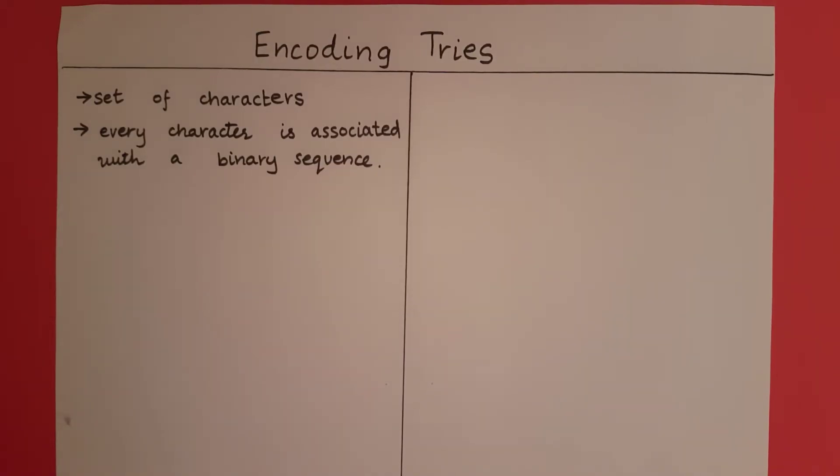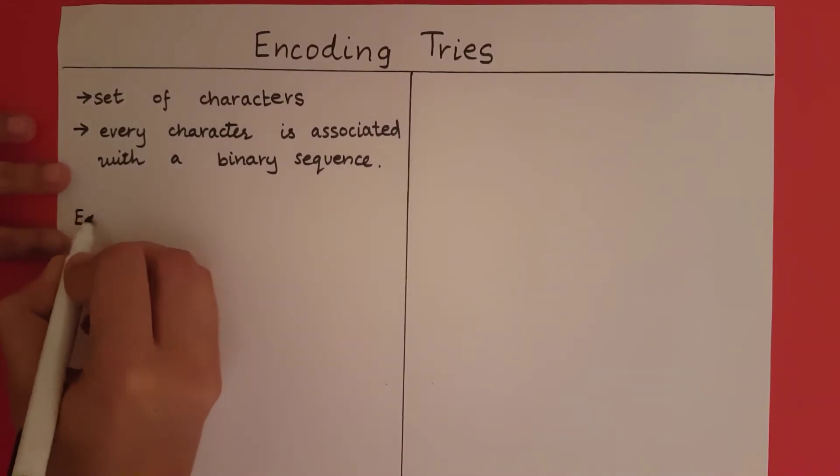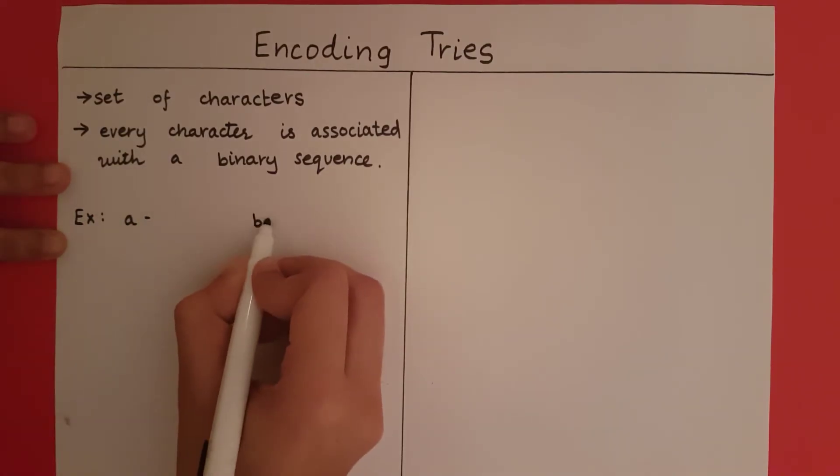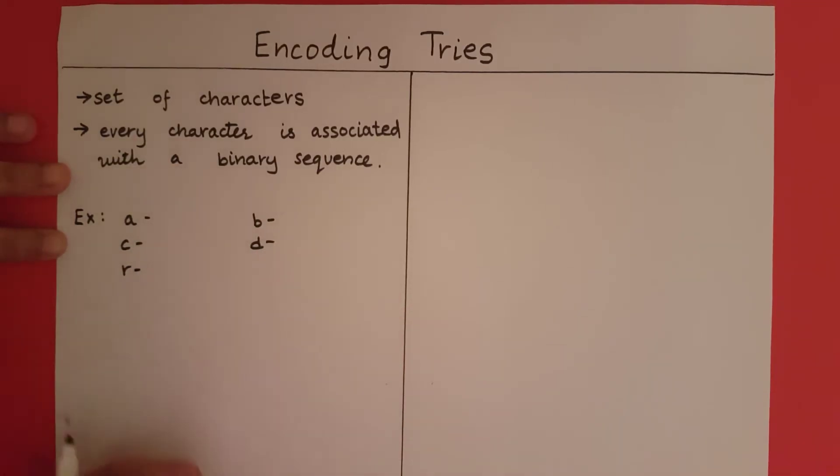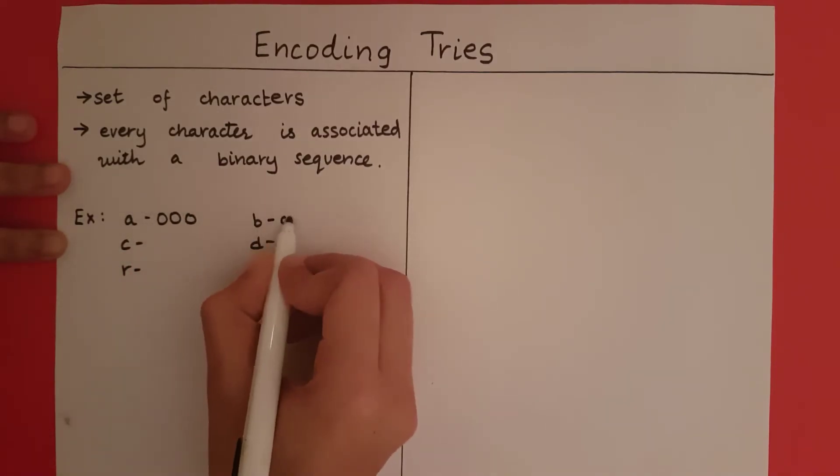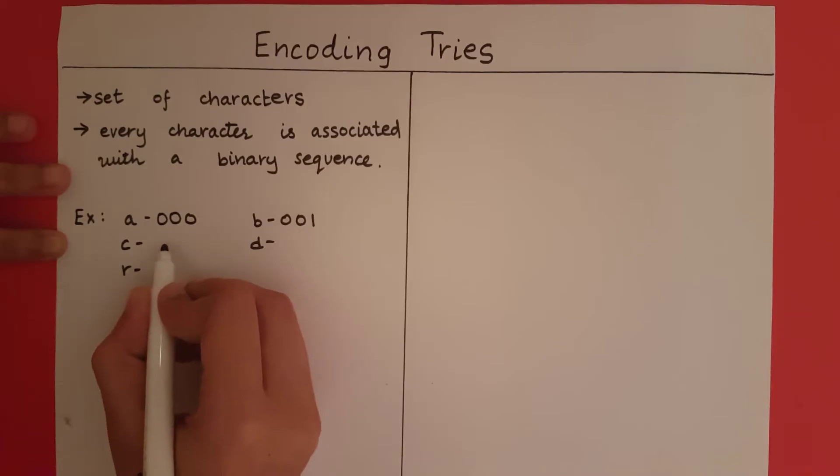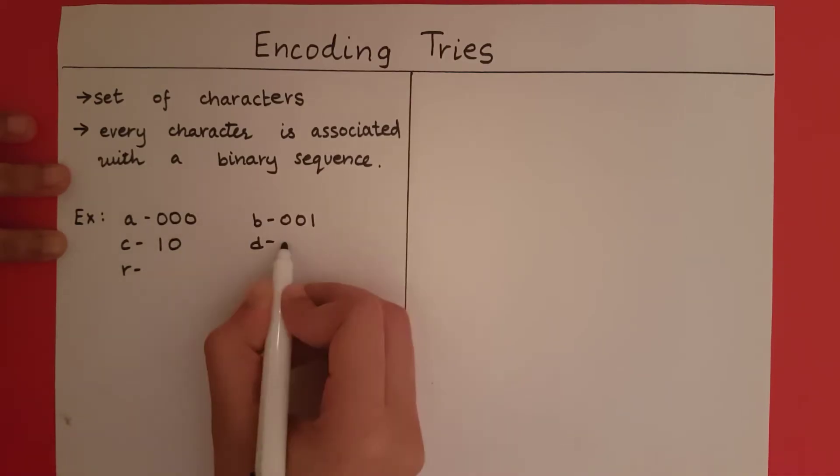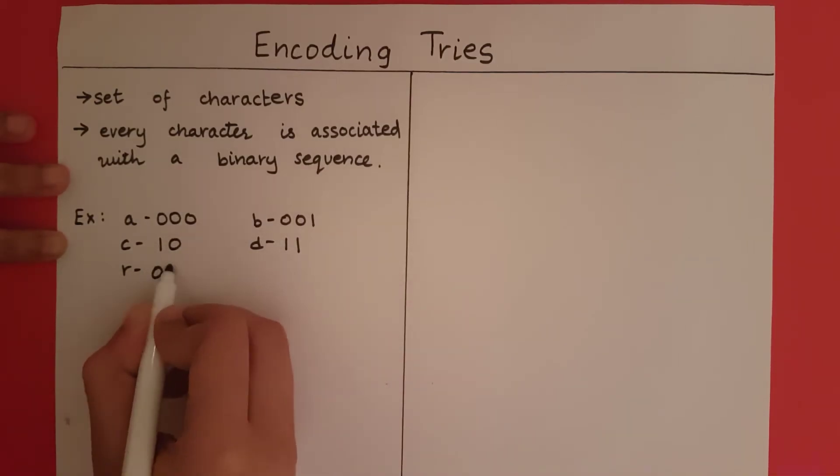Let's take an example to see how we are going to do this. Let's say I have the characters A, B, C, D, and R. The binary string associated with each of these characters are 000, 001, 10, 11, and 01.